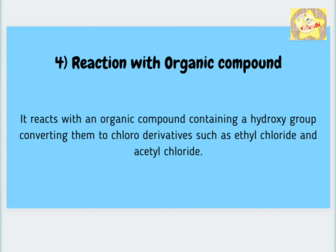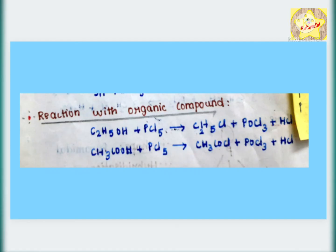Reaction with organic compound. Phosphorus pentahalide reacts with organic compounds containing a hydroxy group, converting them to chloro-derivatives such as ethyl chloride or acetyl chloride.